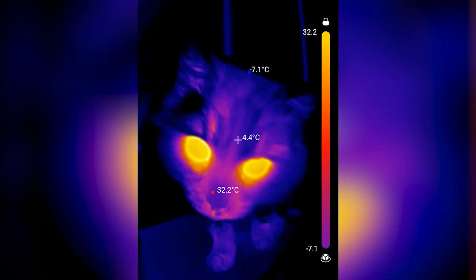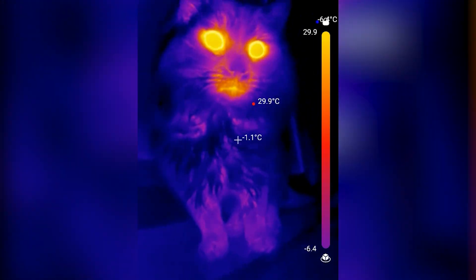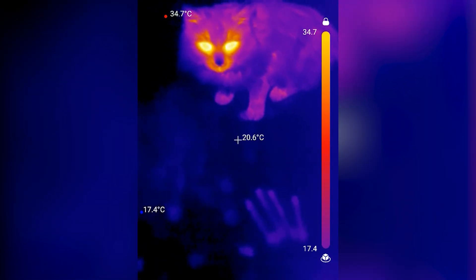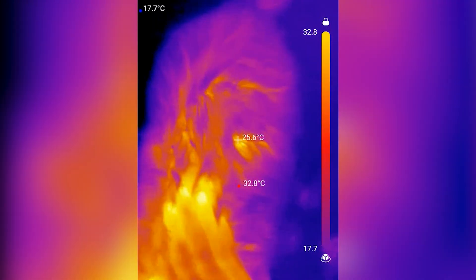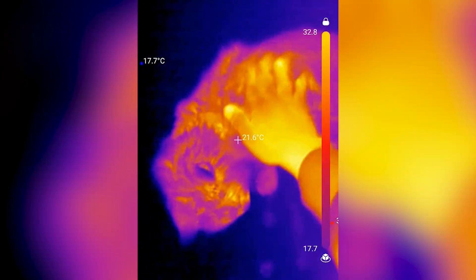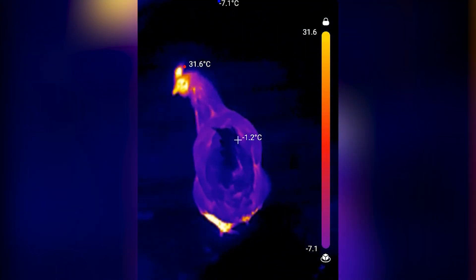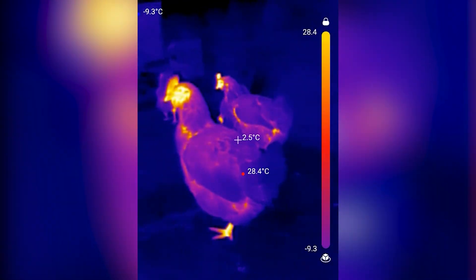Since everything around us emits infrared light, let's take a look at something warm and alive, like my cat. You can clearly see how fur helps trap heat, keeping him warm in the winter. The same principle applies to chickens. Their feathers serve the same function.